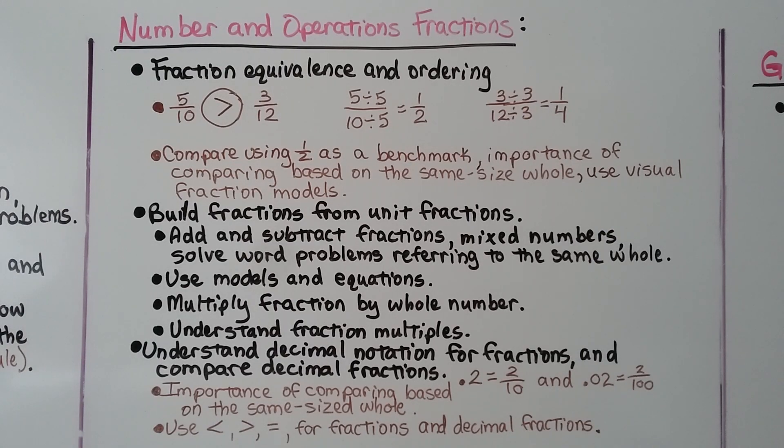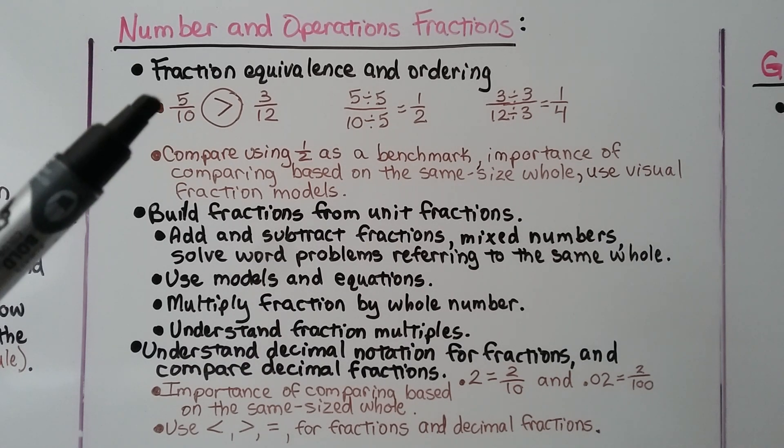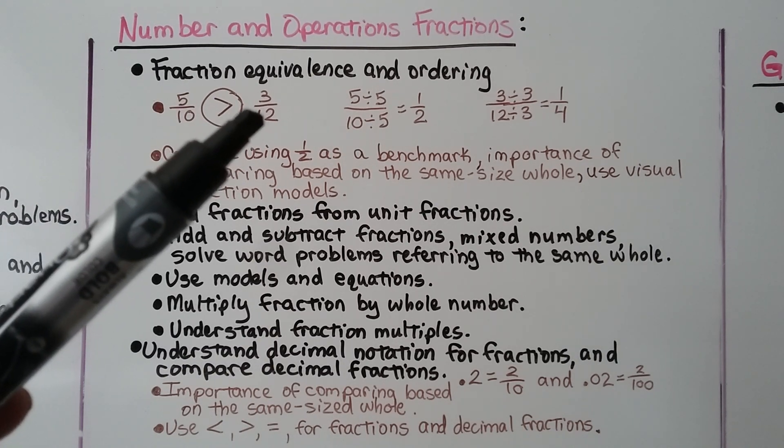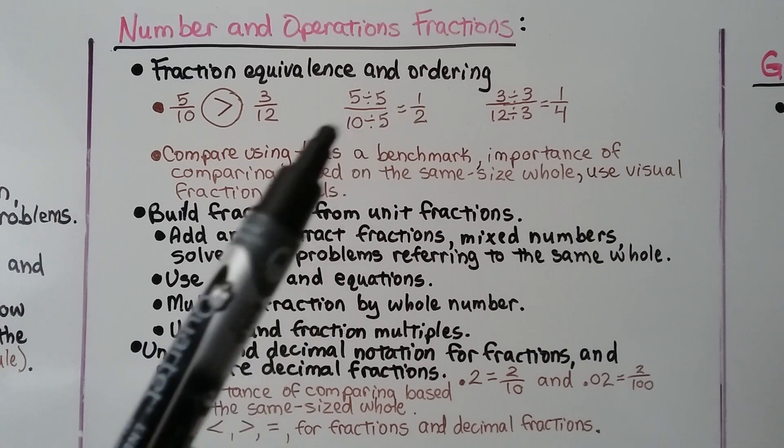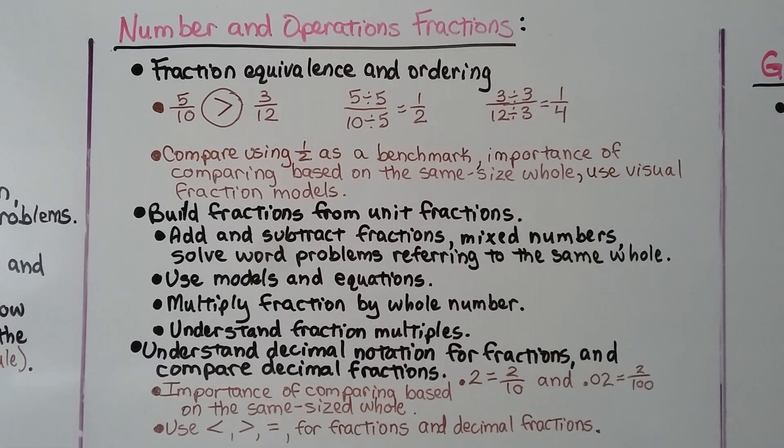Number and Operations Fractions: You should understand fraction equivalence and ordering. You should be able to have 5 tenths and compare it to 3 twelfths by making equivalent fractions and then putting them in order from least to greatest. Compare using half as a benchmark. The importance of comparing based on same size wholes, use visual fraction models.